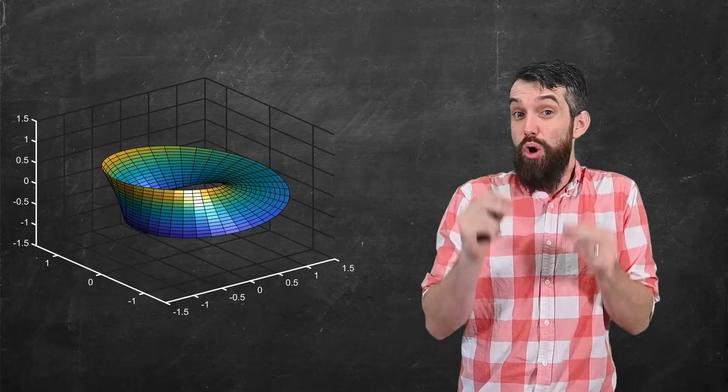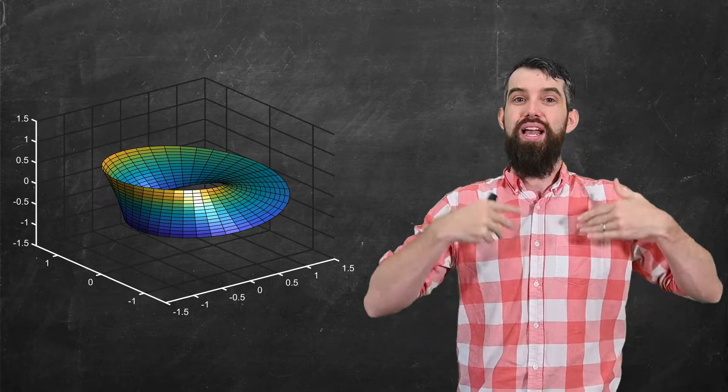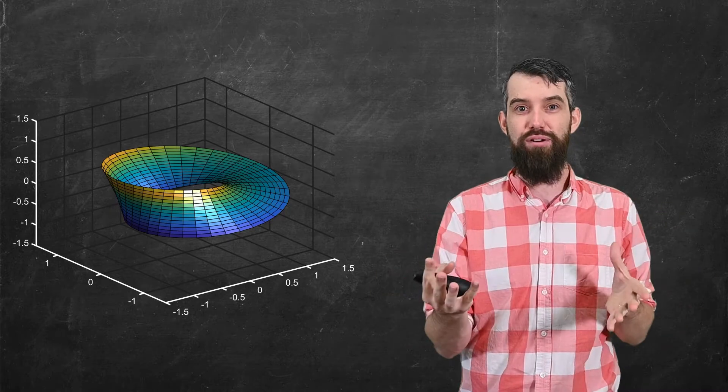I cannot continuously assign normal vectors to a Möbius strip. So the point is that the Möbius strip is not an orientable surface. There's no way I can continuously assign a unit normal vector field along that surface.